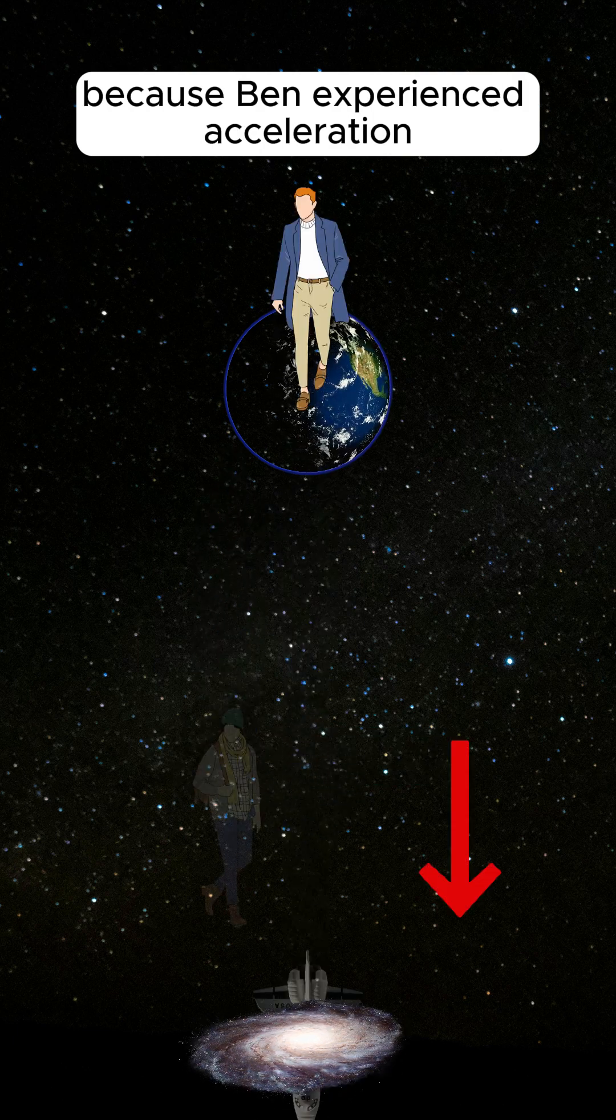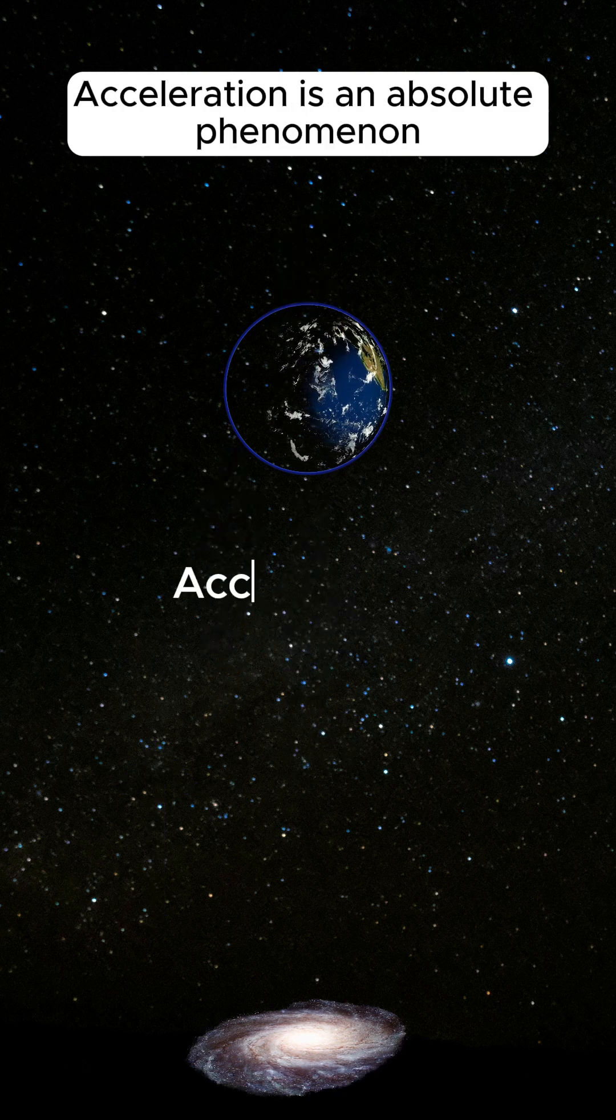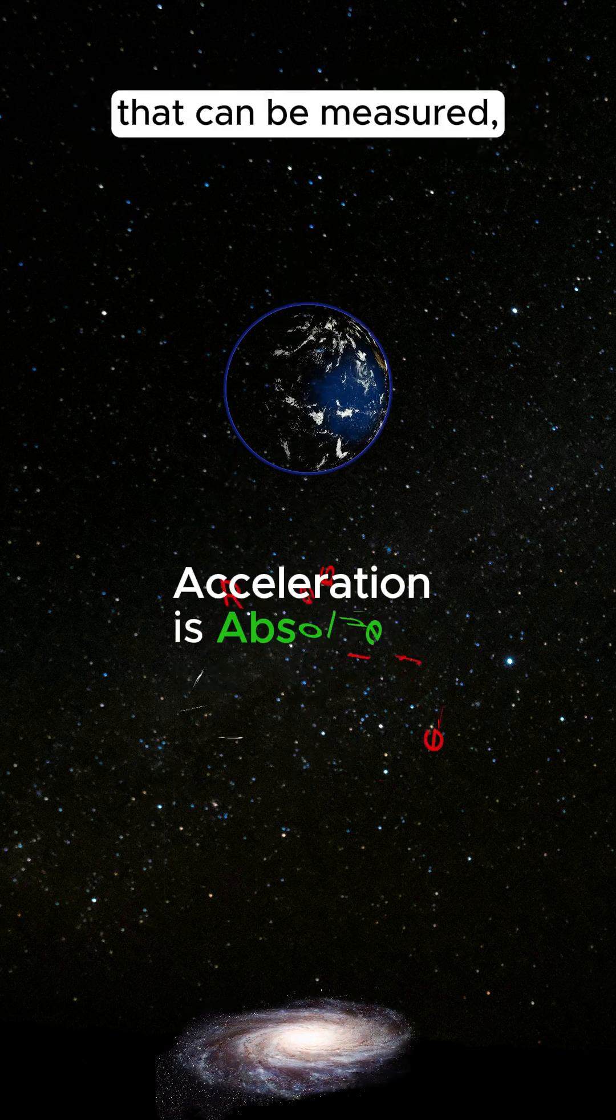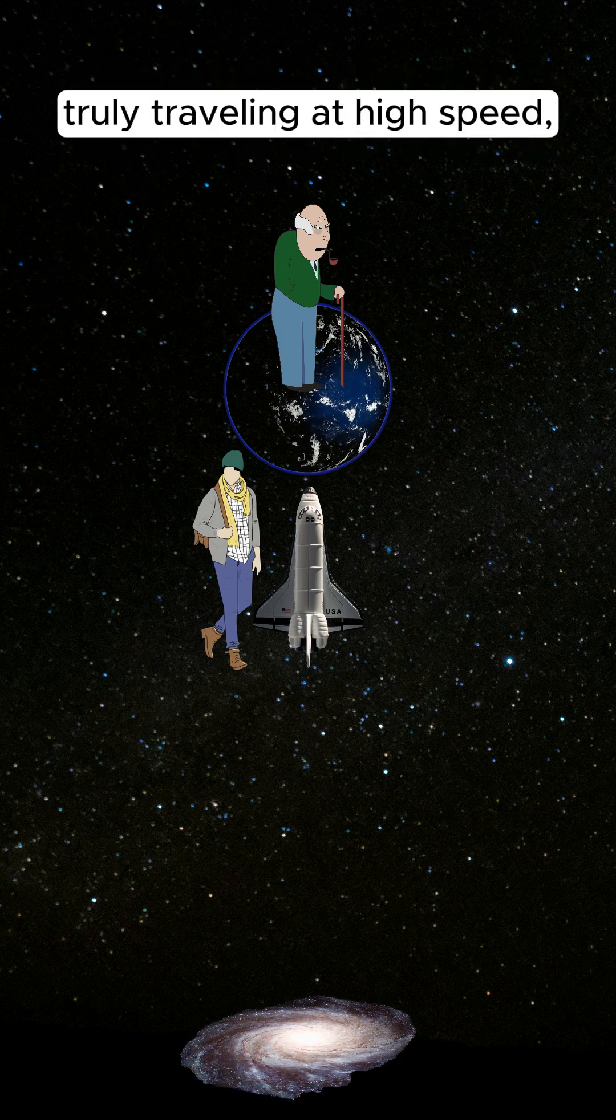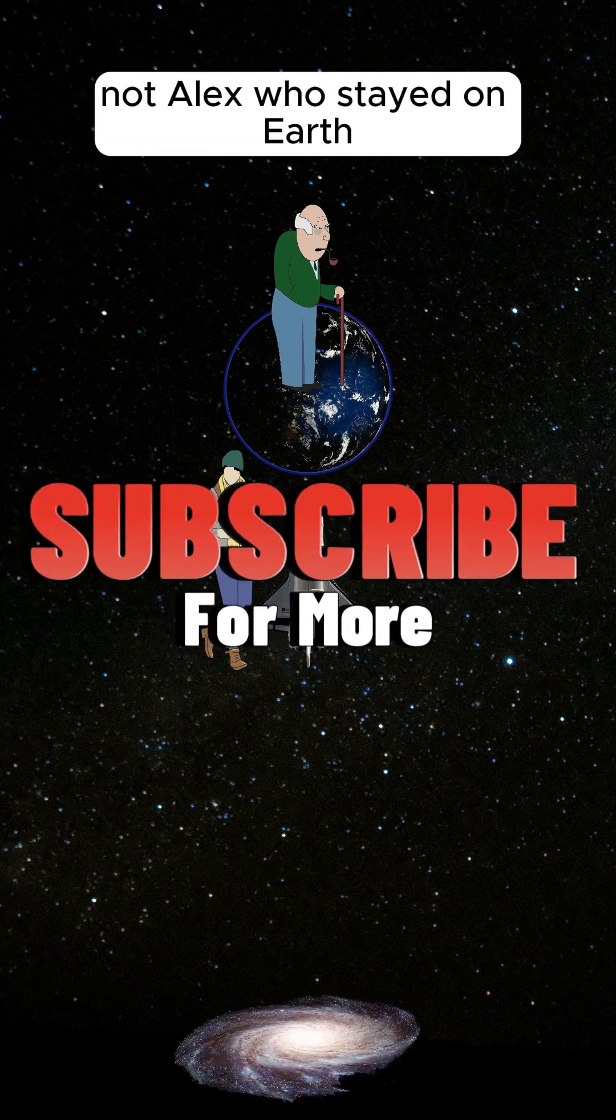because Ben experienced acceleration when he turned back towards Earth. Acceleration is an absolute phenomenon that can be measured, making it clear that Ben was the one truly traveling at high speed, not Alex who stayed on Earth.